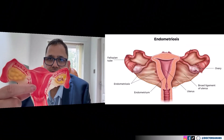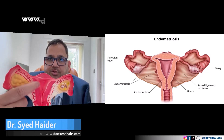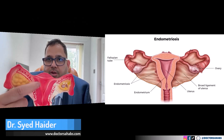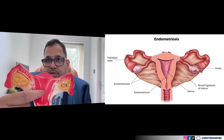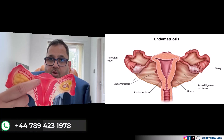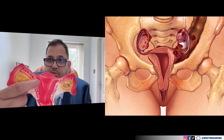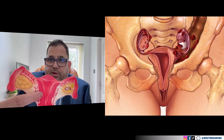Let me show you the model here quickly for better understanding. You can see this uterine model. The uterus has three linings — the innermost lining is called the endometrium, which is shed during menstruation. We are talking about this endometrial tissue. The second lining is called the myometrium, which is the muscular wall of the uterus.